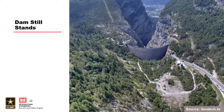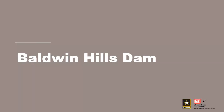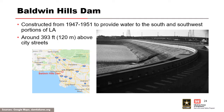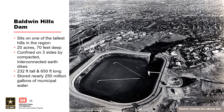The next one is Baldwin Hills Dam. This was constructed in the late 1940s, early 1950s, built to provide water supply. Notice the location — we're in California, very close to Los Angeles, a highly populated area. This particular water supply project sat on the tallest hill in the area, about 400 feet above the city streets. It's about 20 acres, 70 feet deep, forming a sort of ring dam. It's 232 feet tall, about 700 feet long, and stored about 250 million gallons of water.